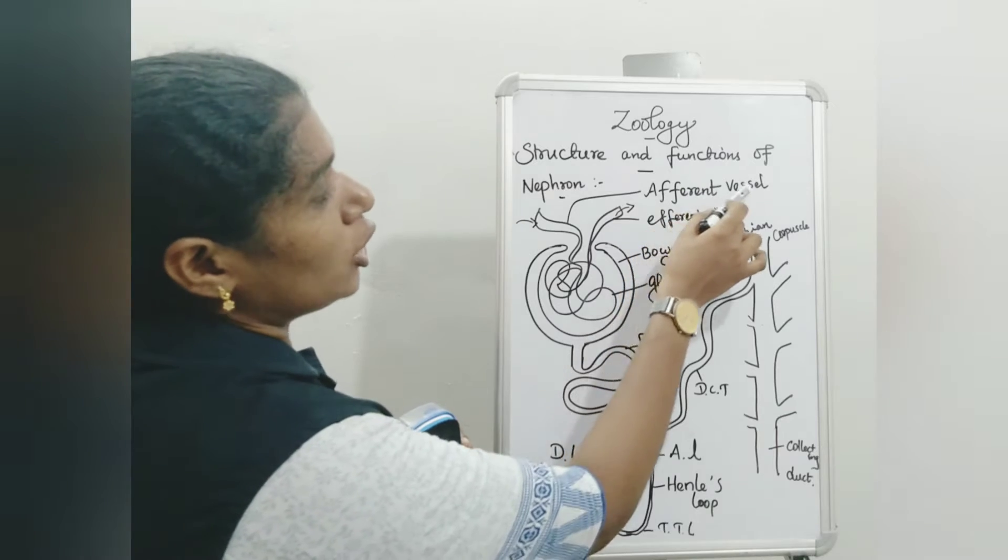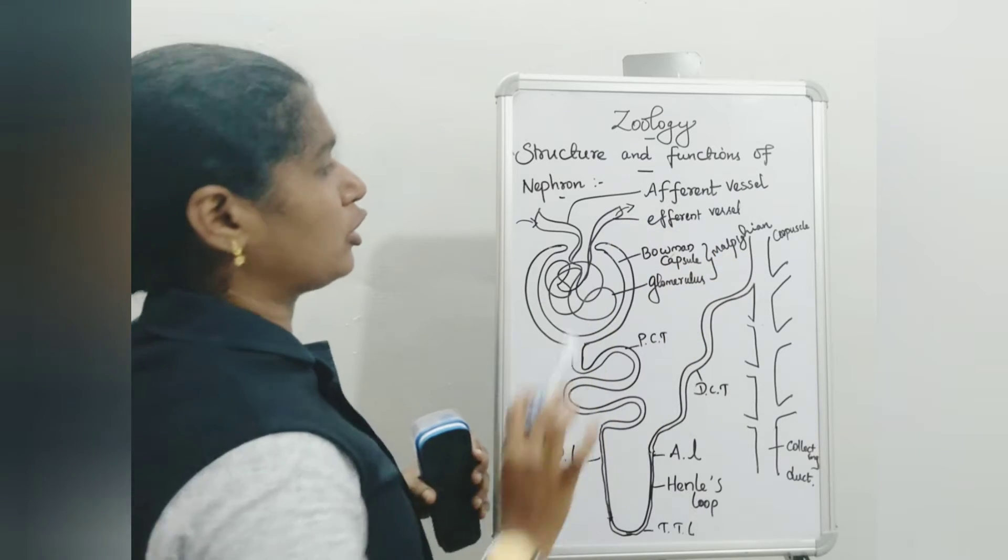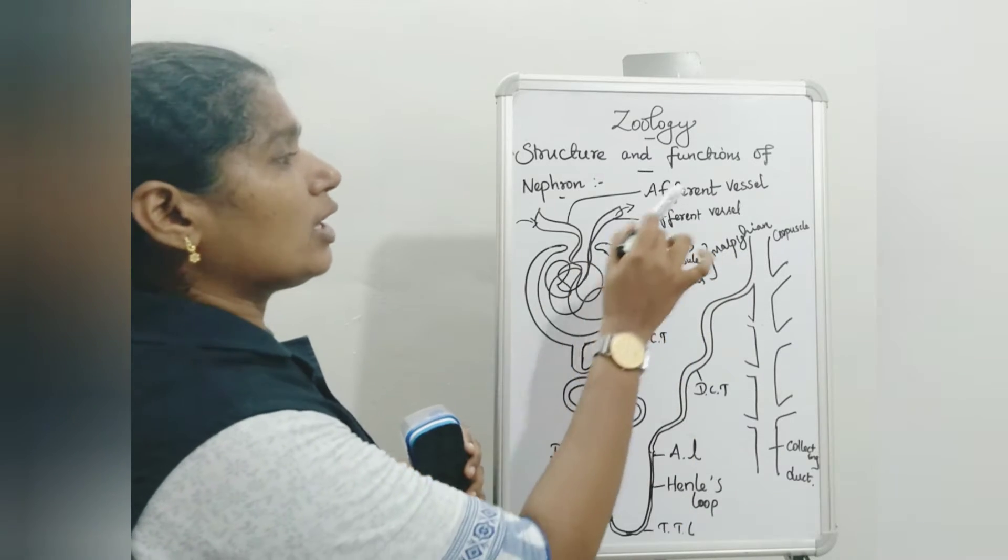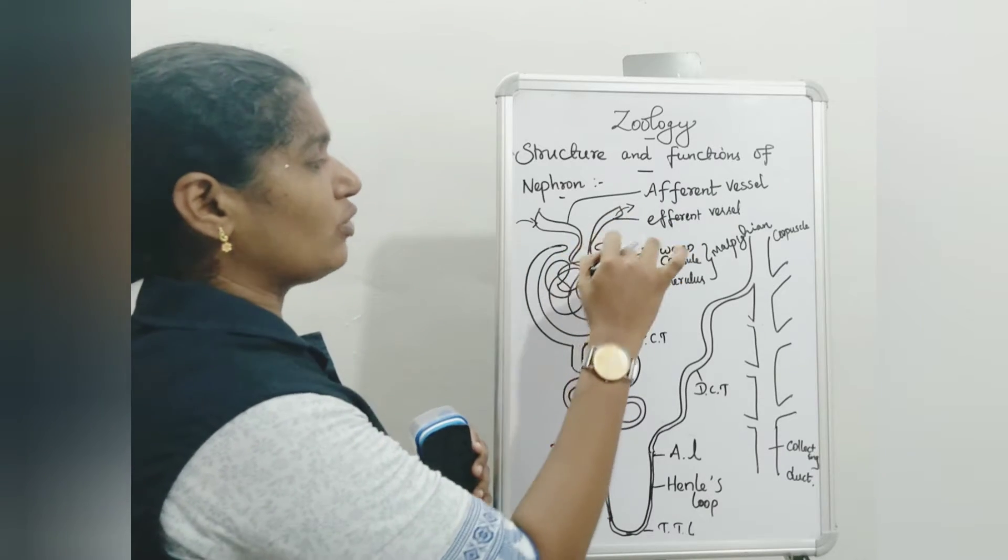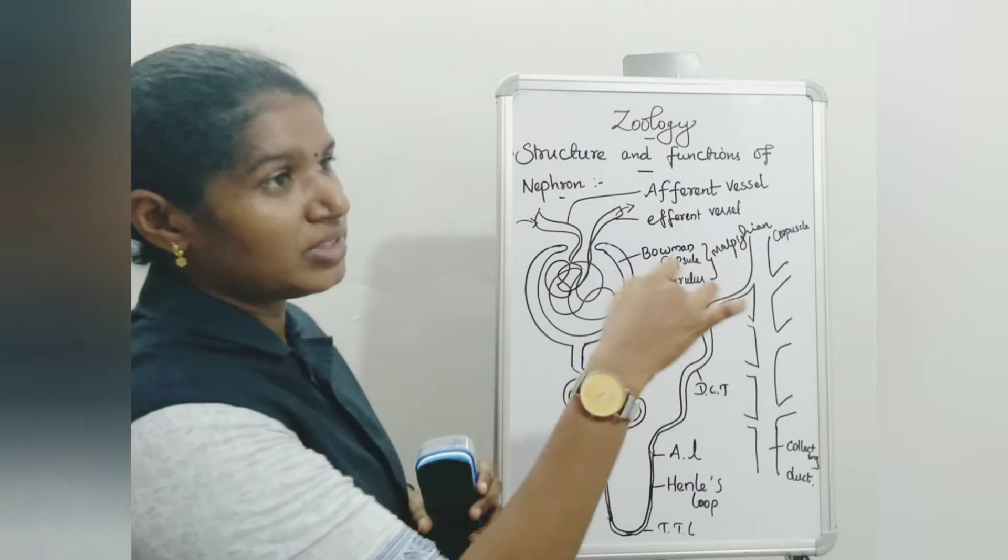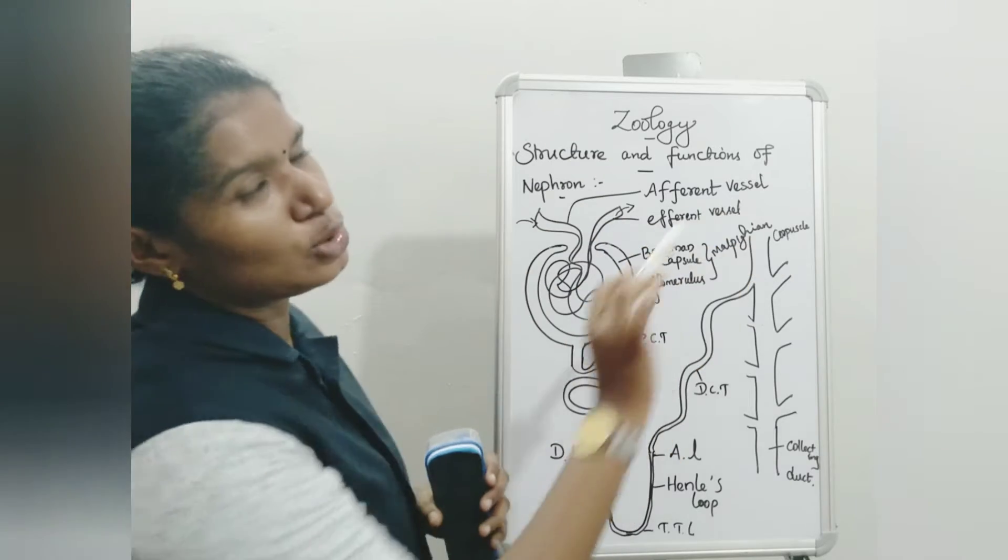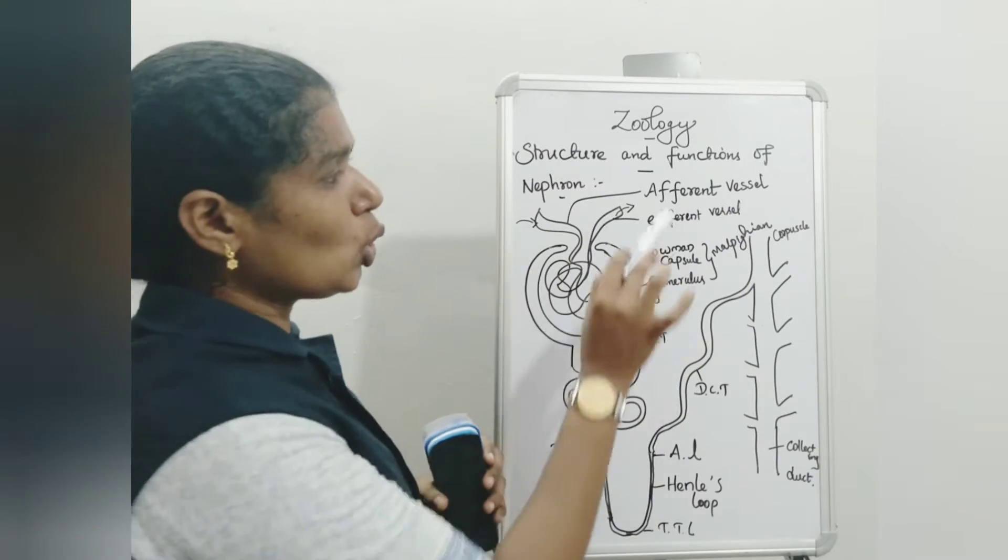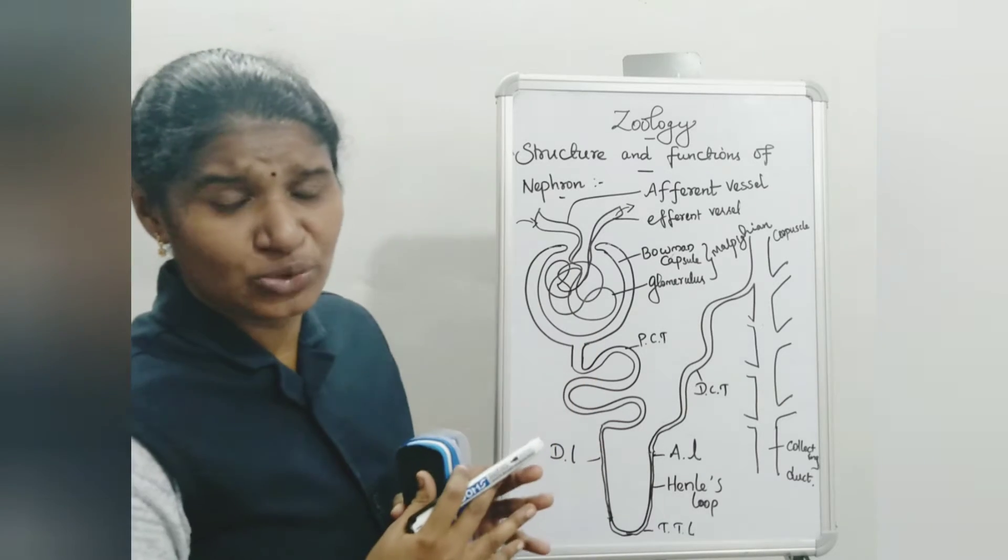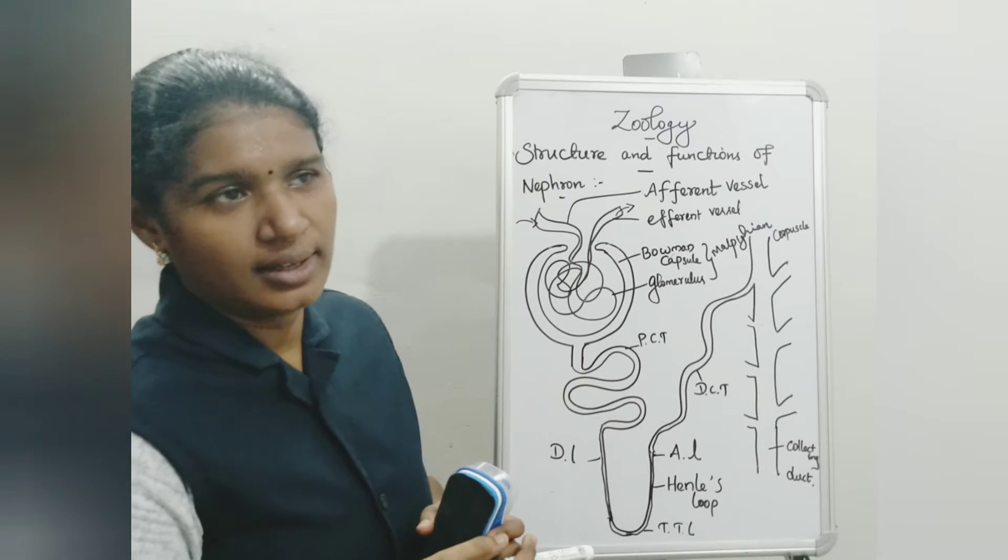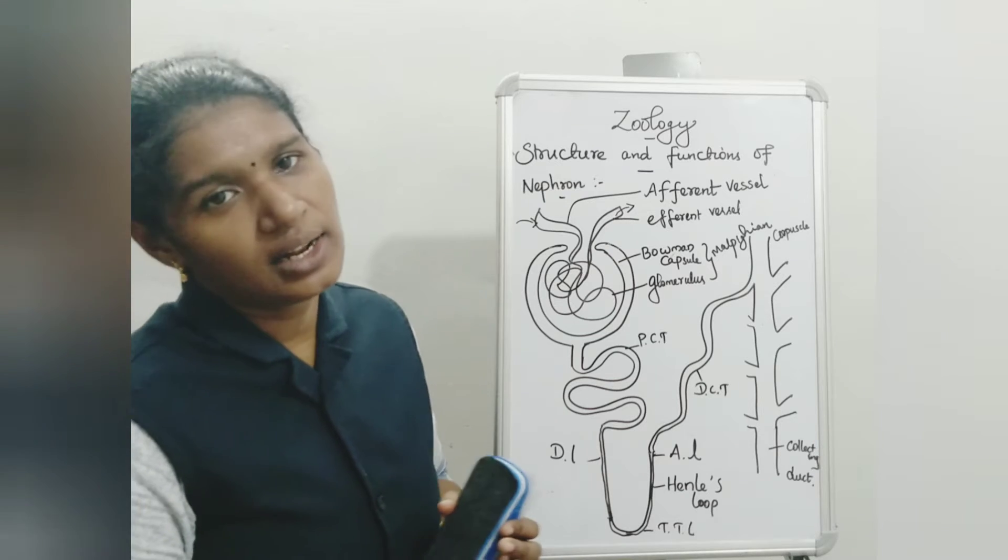One is called afferent arteriole, that is afferent vessel. Another one, efferent vessel, that is efferent arteriole. Afferent arteriole carries the blood into nephron, and the efferent vessel sends blood out of the nephron. So afferent to carry, efferent to send out. These vessels carry and send out the blood. Here it is connected with the renal artery and renal vein, because we know that the kidney is made up of renal veins and renal arteries.